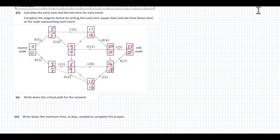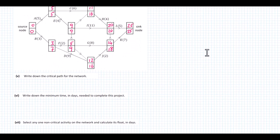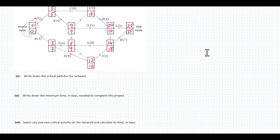The next part asks us to write down the critical path for the network. The critical path consists of nodes where the early and late times are the same. So our critical path is A, E, I, and L. The minimum time in days needed to complete this project is 25 days.